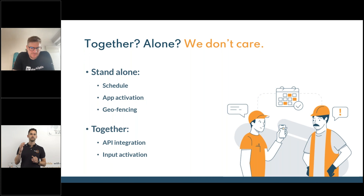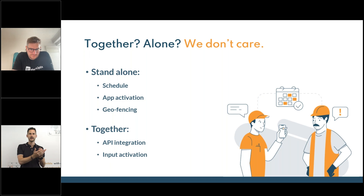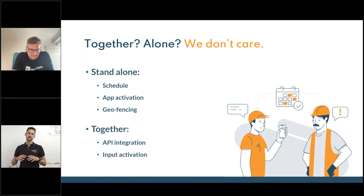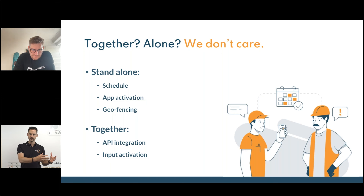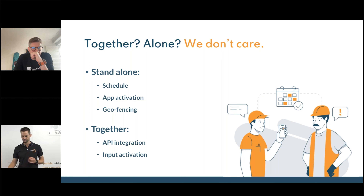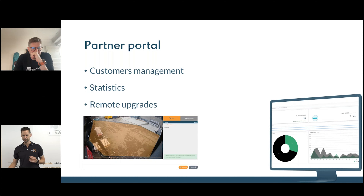If your cell phone gets stolen, somebody could break in quite easily without additional authentication. On the geofencing side, you can also do it on a user basis — in our partner portal you can set up different users, and not every user is allowed to activate and deactivate the geofencing mode. Then there's API activation: if you're using another platform where you do the scheduling, you can use the API to activate and deactivate. You can also use the input as activation — connected to your alarm system, burglar system, or access control system.